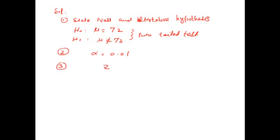For the test statistic, z is equal to x-bar minus mu-naught. As sigma is not given, it is replaced by s under H-naught, where z is approximately a standard normal variable.